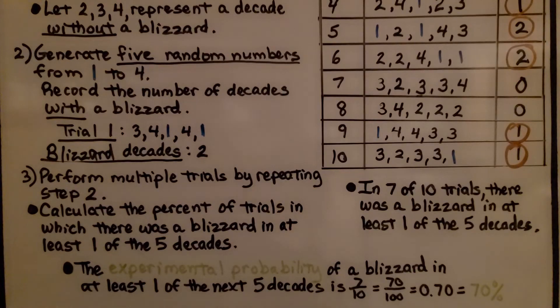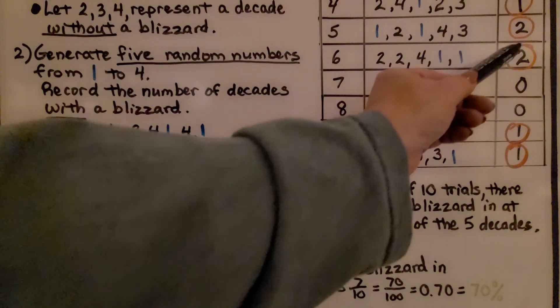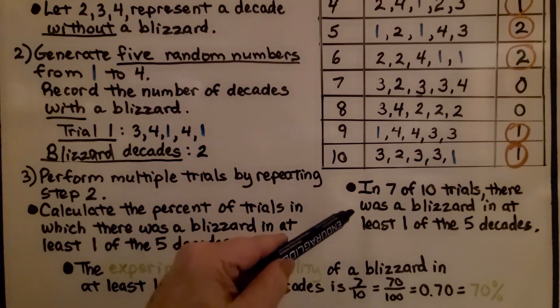We just perform multiple trials by repeating this step. We calculate the percent of trials in which there was a blizzard in at least one of the five decades. Two counts, that's in at least one of them. And in seven of ten trials, there was a blizzard in at least one of the five decades.